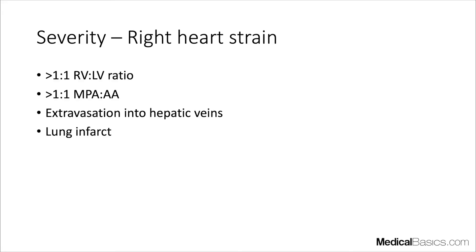Other findings include the main pulmonary artery to ascending aorta ratio: if the pulmonary artery is bigger than the ascending aorta (ratio greater than 1:1), you can consider right heart strain. A very nonspecific finding is extravasation of contrast into the hepatic veins via the IVC. Separately, as things progress, you can have infarction of the lung — a complication rather than a direct marker of right heart strain.